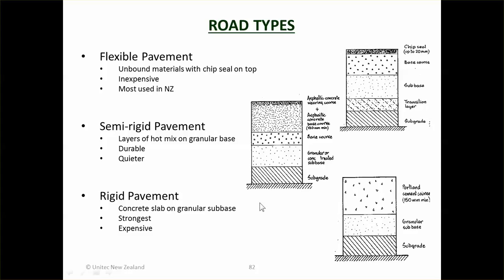Hot mix has the advantage of being quieter because the surface is much finer. Semi-rigid pavement uses a much thicker layer of asphalt concrete to provide a structural layer as well as the base course, so the base course and subbase can actually be thinner since some of the load is taken by the AC. In flexible pavement, the chip seal or AC on top is assumed to take no load at all. A rigid pavement is concrete — a concrete slab, often reinforced, 100–150mm thick on top of a granular subbase. Used for driveways and motorways with high traffic loadings. It lasts longer but costs much more to construct.